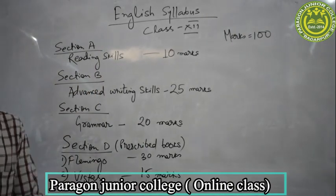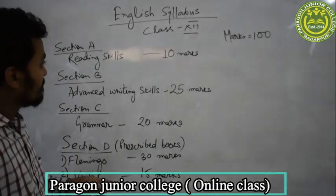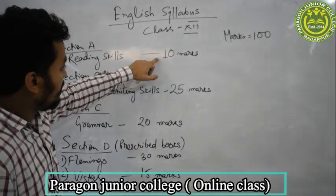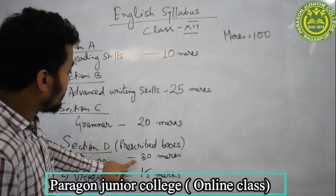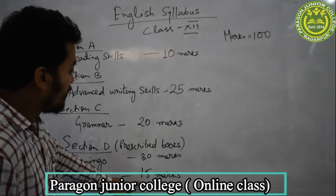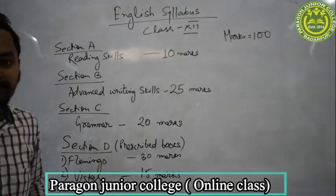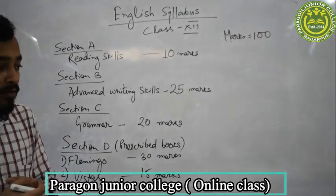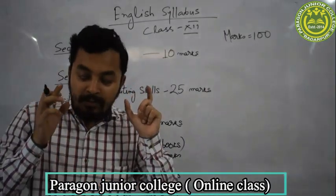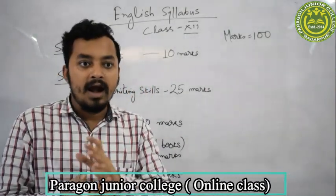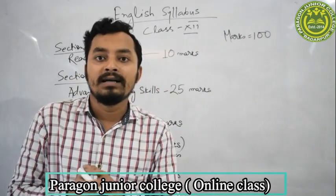So here is the complete syllabus. Let us count once: 10 plus 25 plus 20 plus 30 plus 15 is 100. So here is the total syllabus of class 12. Now I will break each section and show you what topics are included in each section to make you understand better.